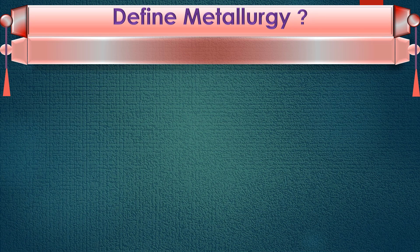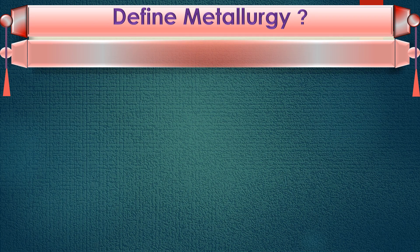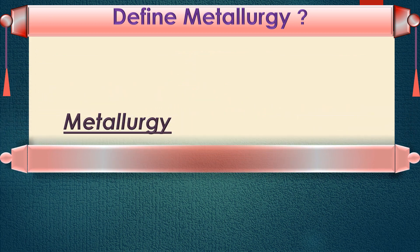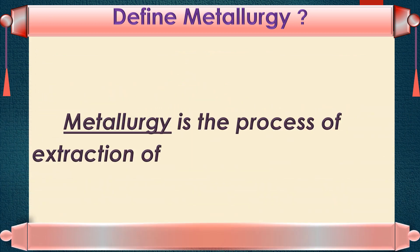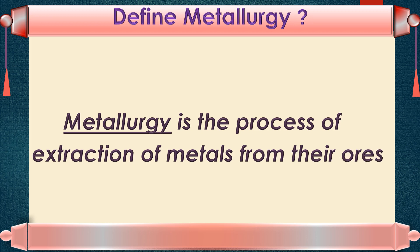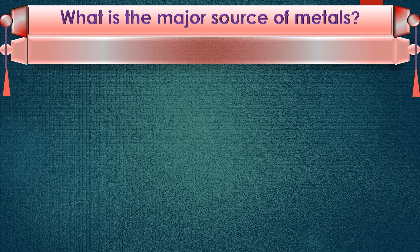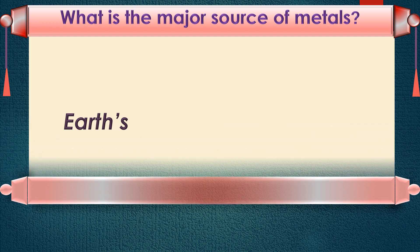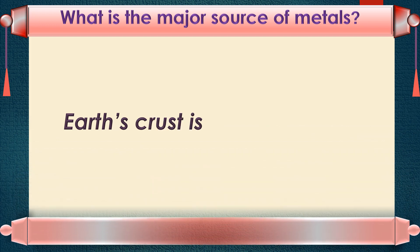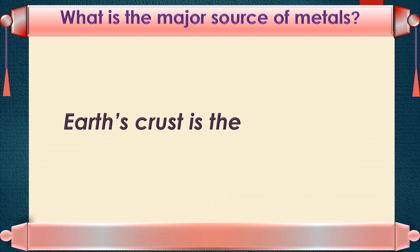Define metallurgy. Metallurgy is the process of extraction of metals from their ores. Next question: What is the major source of metals? Earth's crust is the major source of metals.